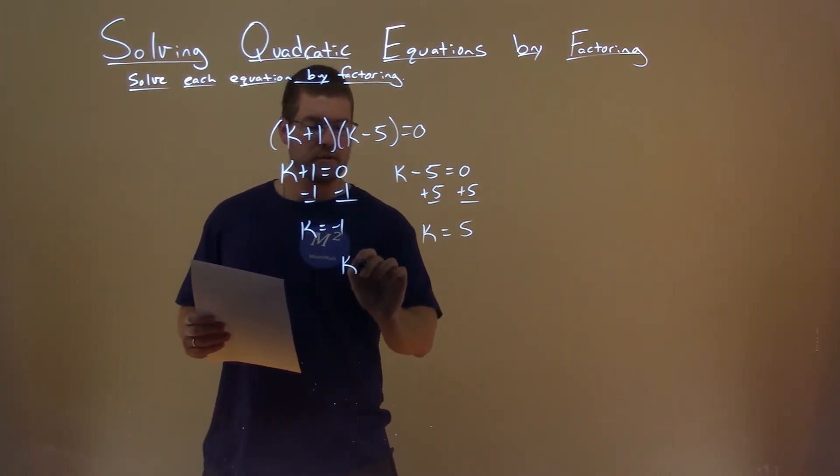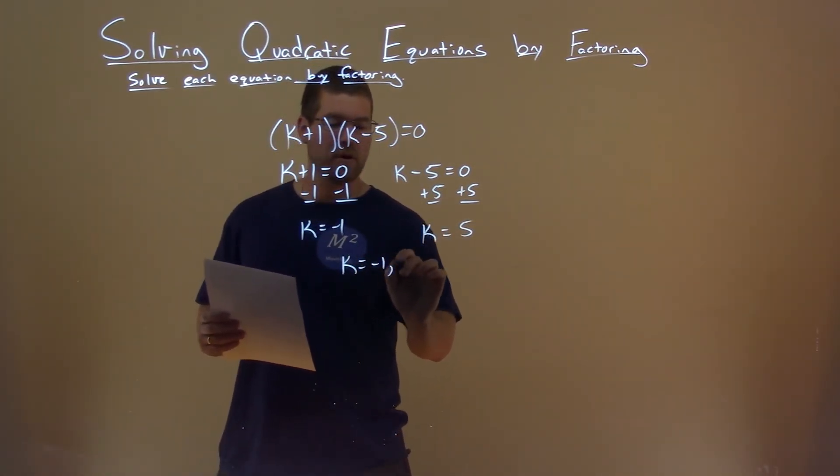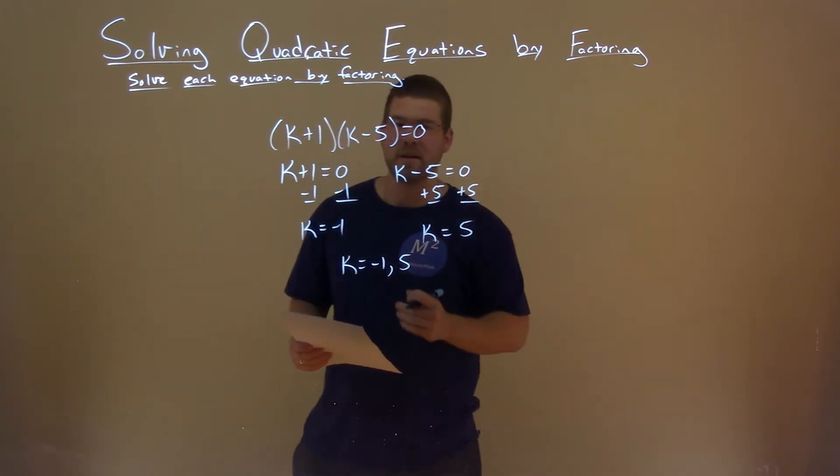So our two solutions are k = -1 and k = 5, and that is our final answer.